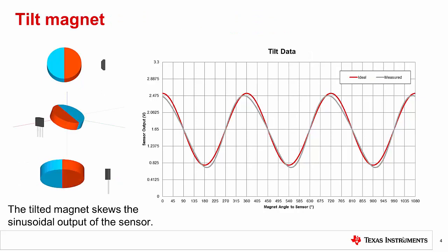If the magnet rotating is tilted within its axis of rotation, the change in the magnetic field will cause the output produced by the sensor to no longer be a perfect sine wave. The output may change based on the orientation and severity of the tilted magnet. This plot shows one possible outcome where the sine wave gets skewed.